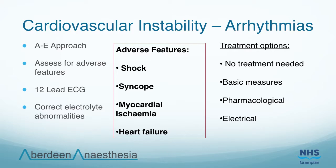Both tachy and bradyarrhythmias may occur in the post-operative period. Causes include hypercapnia, hypoxemia, electrolyte or acid-base disturbance, pain, underlying cardiac disease, myocardial infarction, PE and sepsis. You should assess the patient using a systematic A-to-E approach and assess for adverse features such as shock, syncope, myocardial ischaemia and heart failure. A 12-lead ECG must be performed and the underlying cause should be investigated and treated. It is particularly important to correct any electrolyte abnormalities — blood gas analysers often measure electrolytes in addition to pH, O2 and CO2, which can be useful while awaiting formal lab results. Senior help should be sought and specific arrhythmias treated according to current ALS guidelines.